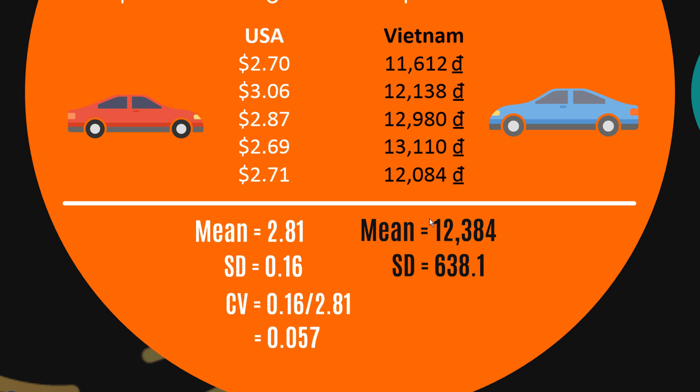Hence why if we're calculating the coefficient of variation, we take the standard deviation divided by the mean and we get 0.057 for USA. There's our standard deviation and mean. For Vietnam we get 0.052 for Vietnam. So in this case it seems that fuel prices in the USA vary more or fluctuate more than fuel prices in Vietnam, or at least they do in this sample.